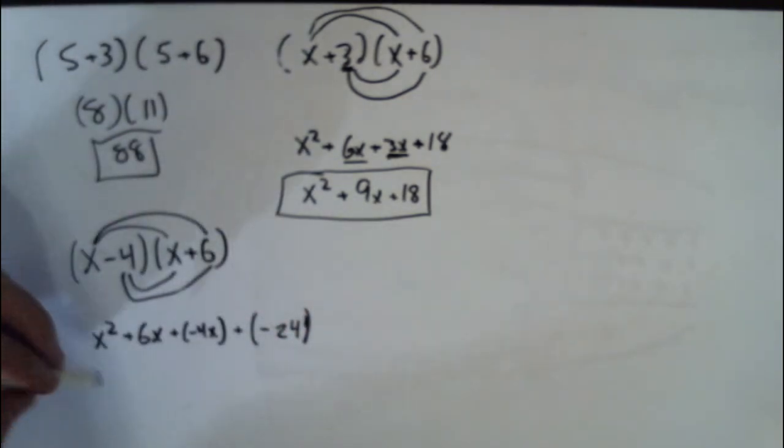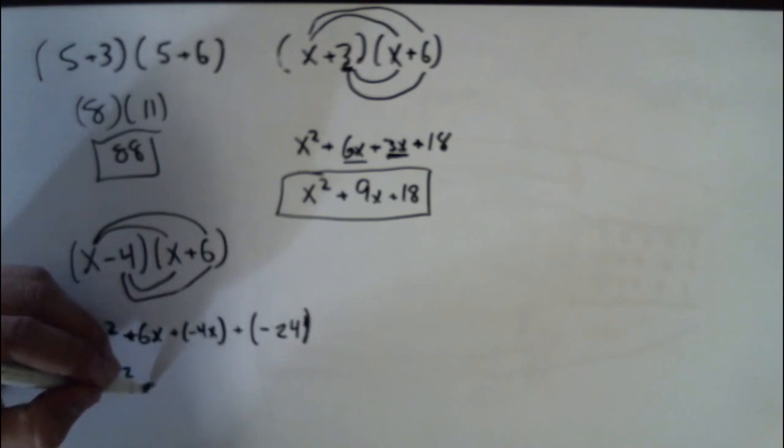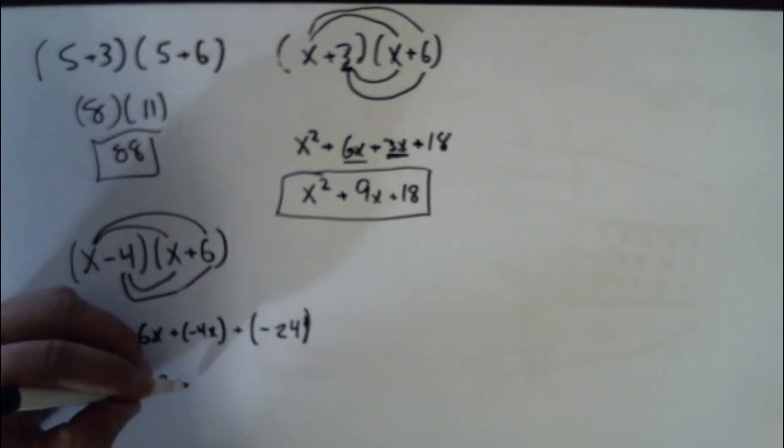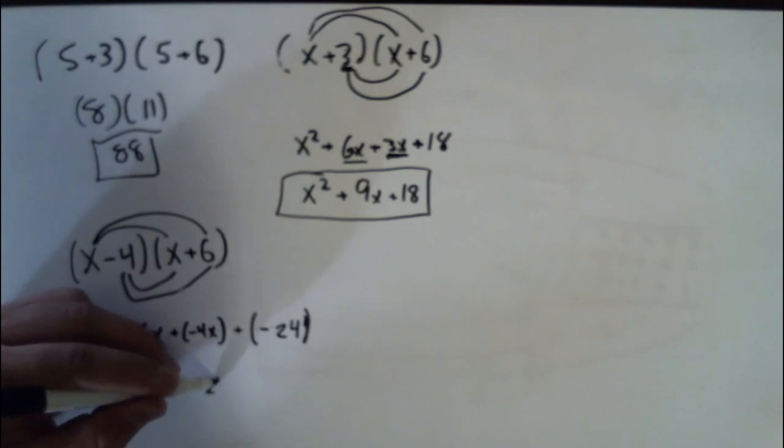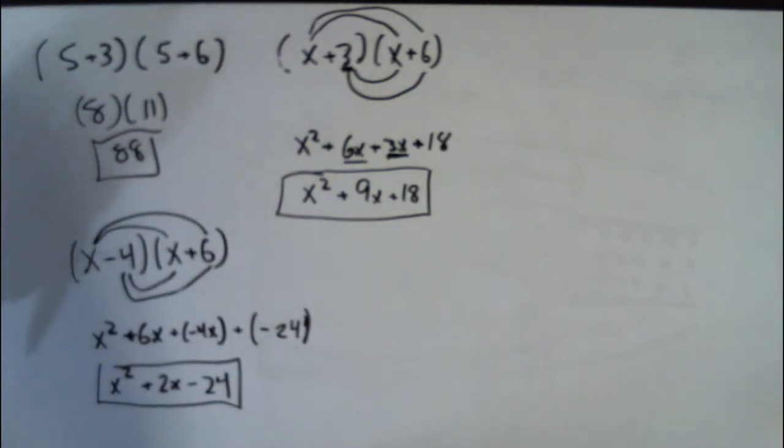So now we combine like terms. So I have x squared and I have plus 6x plus negative 4x. That's plus 6x minus 4x plus 2x, because 6 minus 4 is 2, minus 24. And you have a quadratic equation.